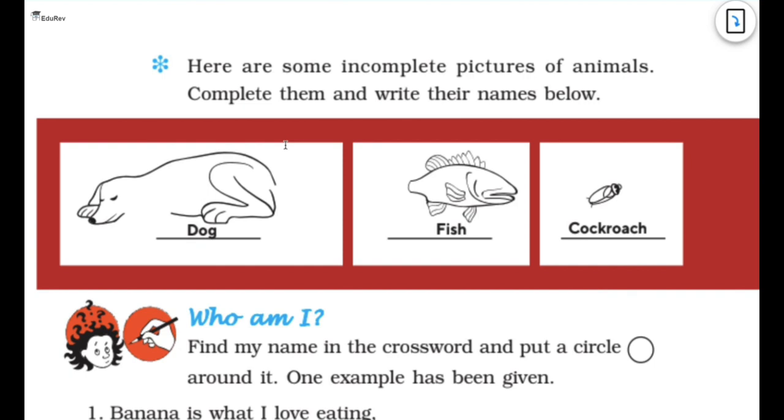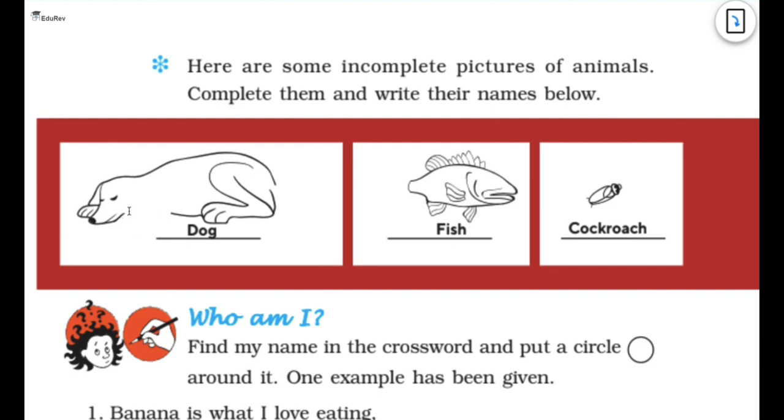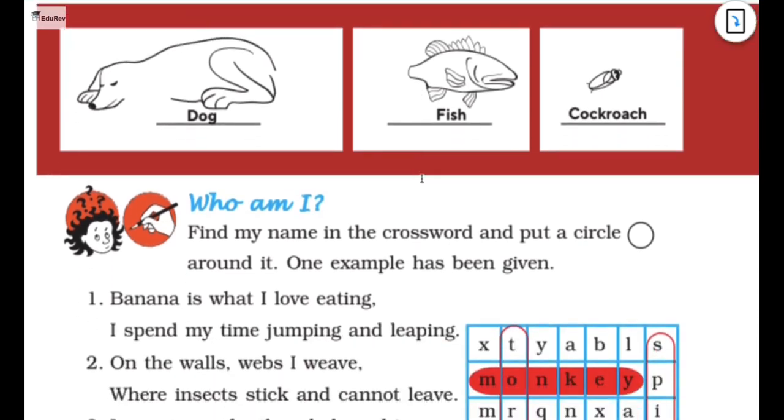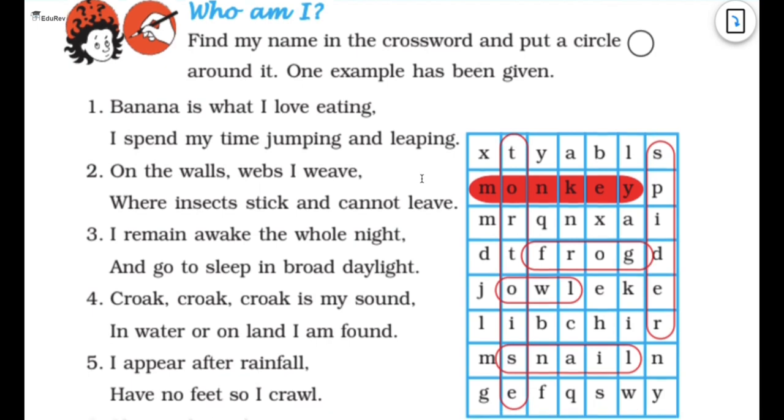The next is that here are some incomplete picture of animals and you have to complete them and write their names below. So we have dog, we have fish and we have a cockroach as well. So what you need to do is you have to make these. So this is a dog so you know we can like draw a dog here. My drawing is so poor so what you can do is you have to draw all these.